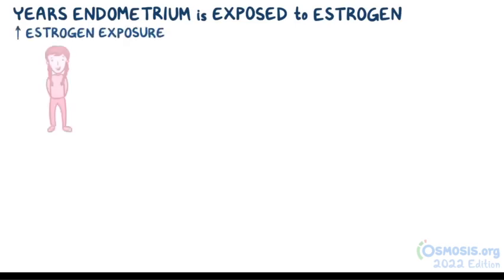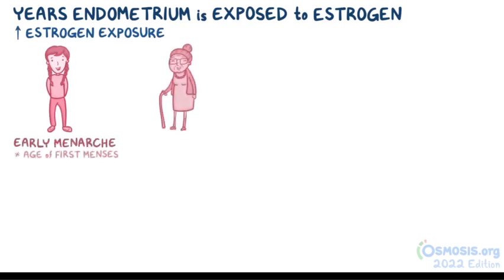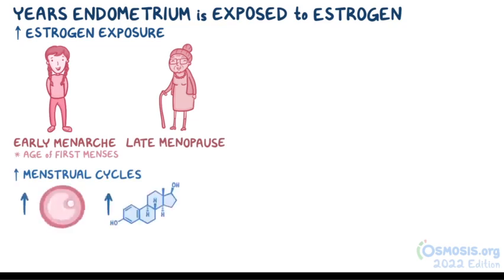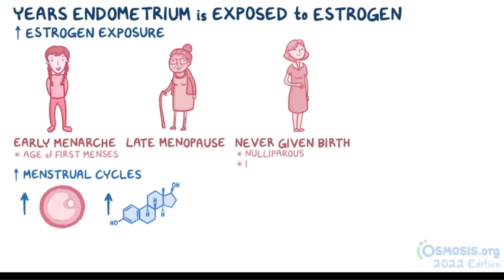A person could have normal estrogen production, but the number of years the endometrium is exposed to estrogen is also a factor. Estrogen exposure is increased in people who have an early menarche or a late menopause, because they experience a greater number of menstrual cycles with more follicular growth and estrogen secretion. Nulliparous females — those who have never given birth — are also at higher risk.